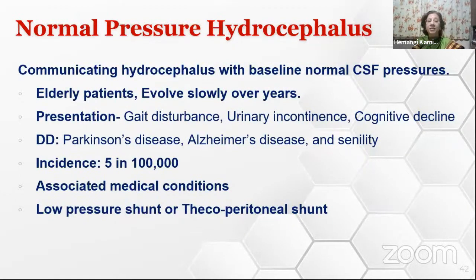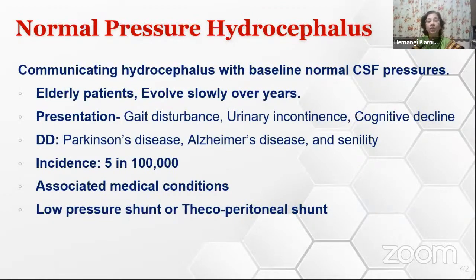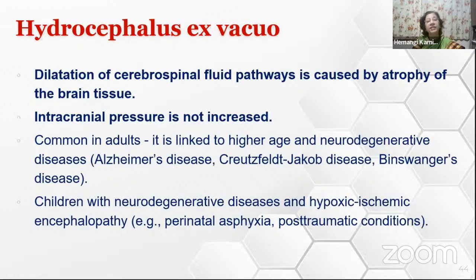Normal pressure hydrocephalus typically presents with the triad of gait disturbances, urinary incontinence, and cognitive decline—leading to confusion with Parkinson's disease, Alzheimer's, or senility. Incidence is 5 per 100,000. They may require a thecoperitioneal or VP shunt; sometimes a low-pressure shunt may be indicated instead of medium pressure. The main anesthesia issues would be associated medical conditions. Another condition is hydrocephalus ex vacuo, where dilatation of CSF pathways occurs due to atrophy of brain tissue—intracranial pressure is not really increased and usually does not require surgical management.